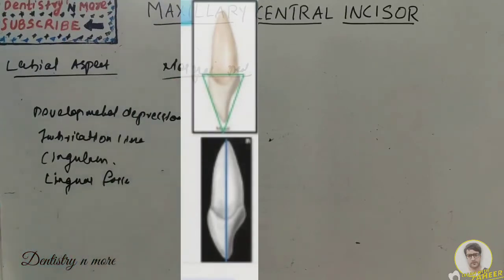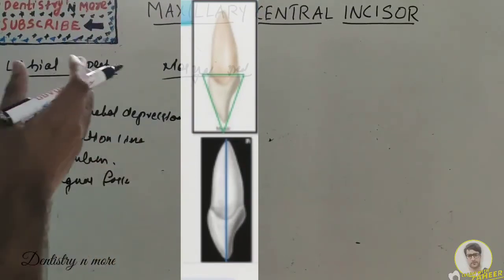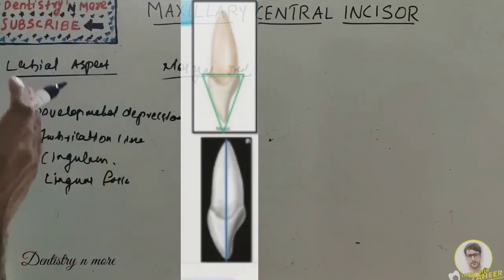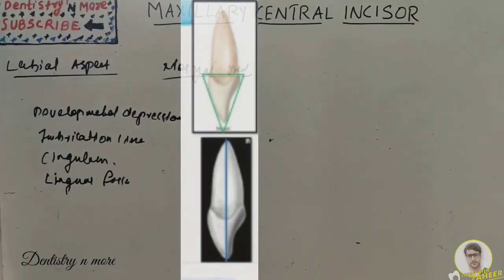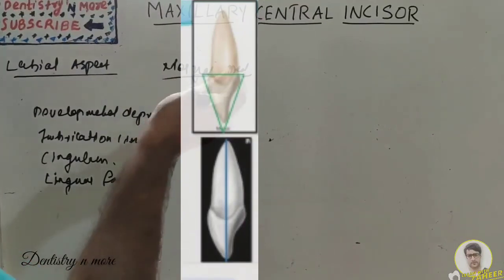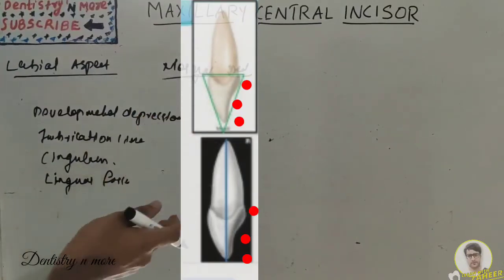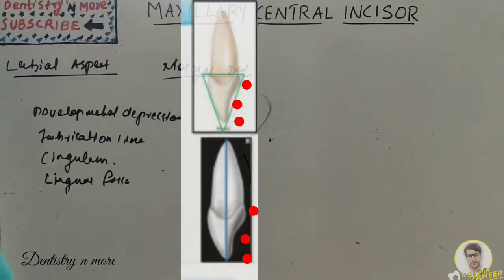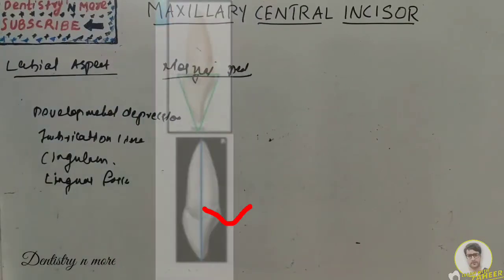On the mesial aspect, the crown is wedge-shaped or triangular, with the base at the cervix and the apex at the incisal ridge. A line drawn through the crown and root from this aspect will bisect the apex of the root and the incisal ridge of the crown. The lingual outline shows convexity at the cingulum, concavity at the middle portion, and slight convexity at the lingual incisal ridge. The cervical line on the mesial surface curves incisally to a noticeable degree.